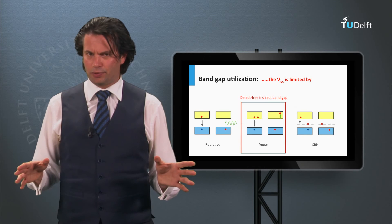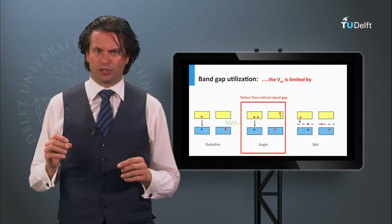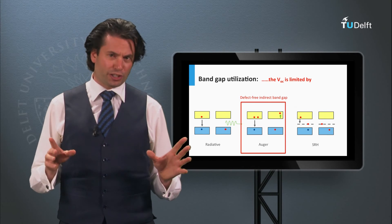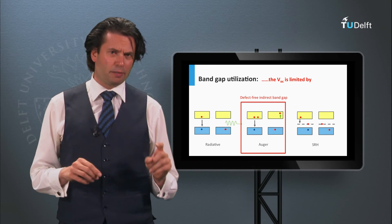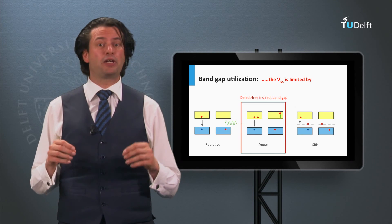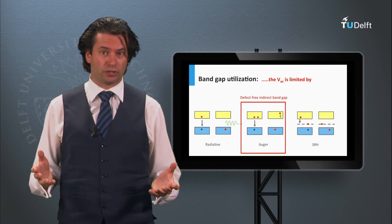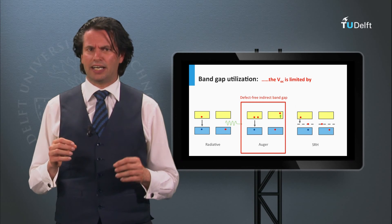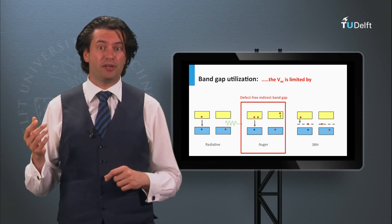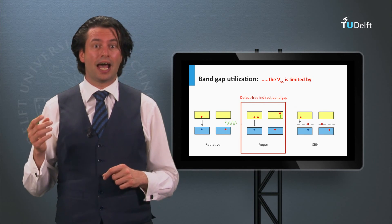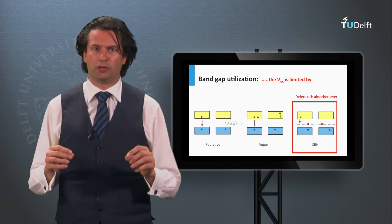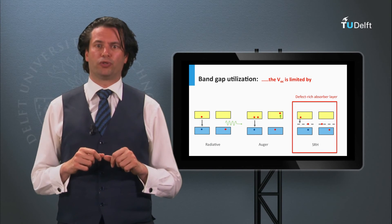Let's consider the last design rule: utilization of the band gap energy. As discussed in week 3, band gap utilization is determined by recombination losses. As silicon is an indirect band gap material, only Auger recombination and Shockley-Read-Hall recombination will determine the open circuit voltage.